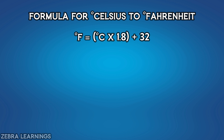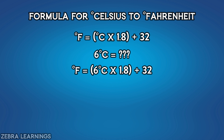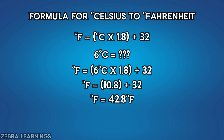Now let's see how to convert 6 degrees Celsius to degree Fahrenheit. Degree Fahrenheit equals 6 degrees Celsius multiplied by 1.8, plus 32. That gives 10.8 plus 32, which equals 42.8 degrees Fahrenheit. So 6 degrees Celsius equals 42.8 degrees Fahrenheit.